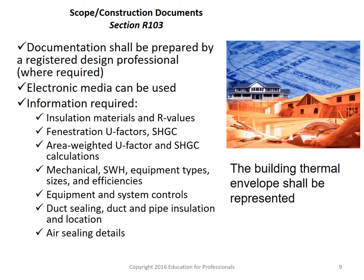Section 103 covers construction documents. Documentation shall be provided by a registered design professional where required, and an electronic meter can be used. At a minimum, construction documents must include insulation materials and R-values, fenestration U-factors and SHGC, area-weighted U-factor and SHGC calculations, mechanical and service hot water equipment types, sizes and efficiencies, equipment and system controls, duct sealing and pipe insulation and location, and air sealing details.